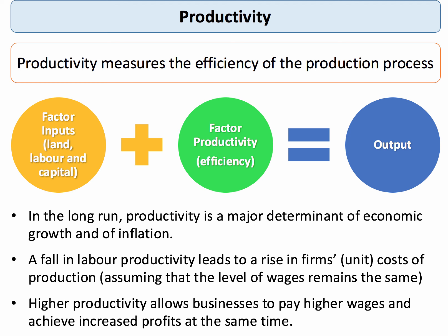For example, a fall in productivity leads to a firm's unit cost of production going up. But equally, if productivity can rise, that allows businesses to pay higher wages because their workers are more efficient, and also achieve increased profits at the same time.